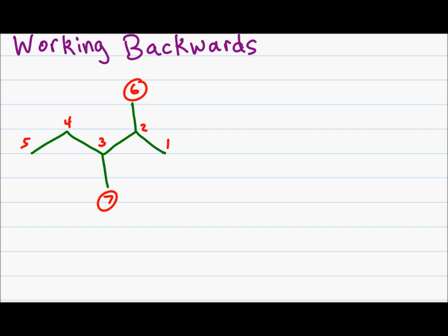For the Lewis structure, I will start by following this carbon chain. Coming off of carbon number two, I have one carbon and coming down from carbon number three, I have another carbon.